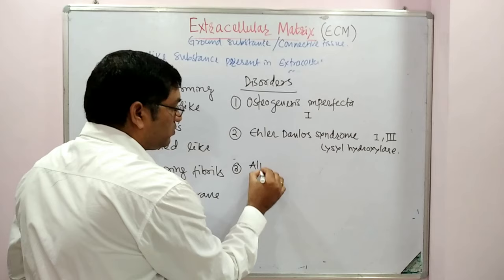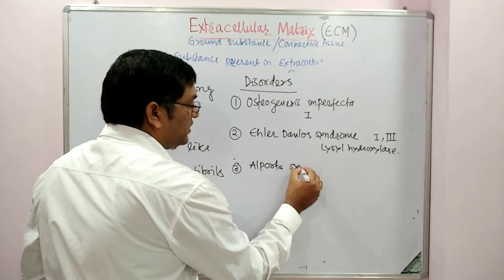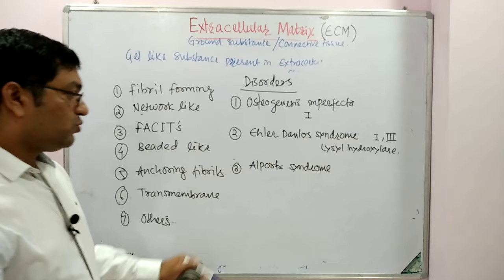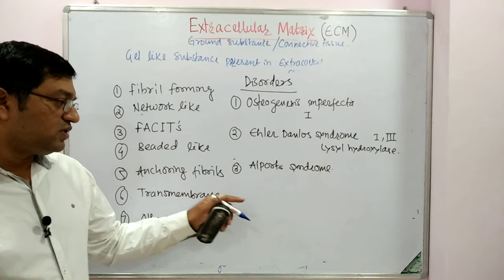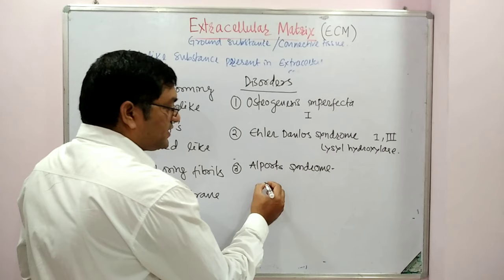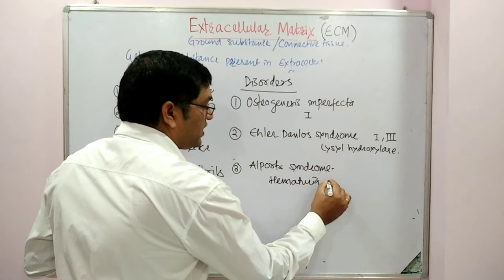The third disorder is Alport syndrome. It is due to a defect in the gene coding for Type IV collagen, which is the laminin collagen. It is characterized by hematuria and renal failure.